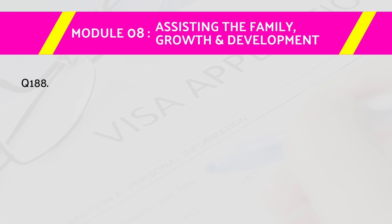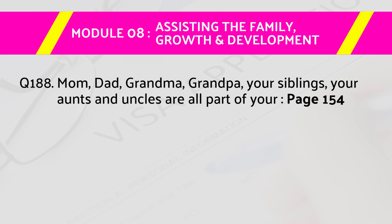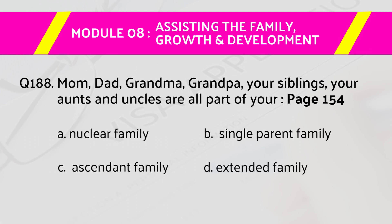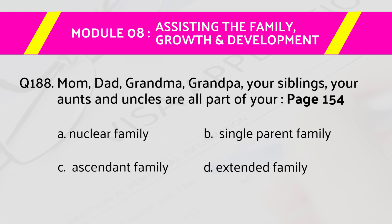Question number 188: Mom, dad, grandma, grandpa, your siblings, your aunts and uncles are all part of your — page number 154. Answers are: A) nuclear family, B) single parent family, C) ascendant family, D) extended family. The right answer is D, the extended family.